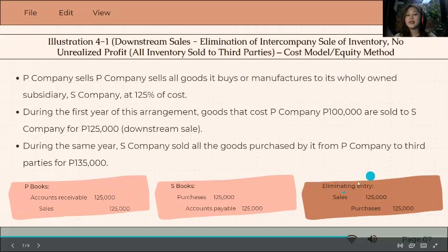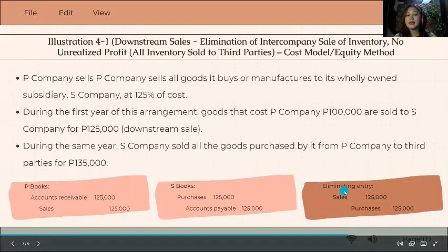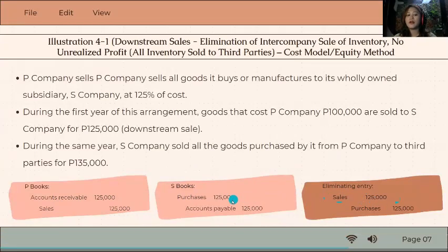But in the consolidated statements, we need to eliminate. So our eliminating entry will be the reverse of these. Debit sales to offset or remove the sales, and credit purchases, 125,000.